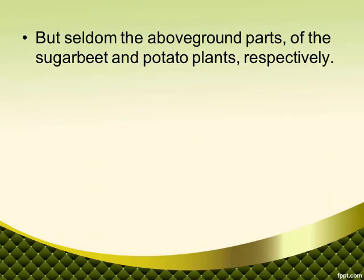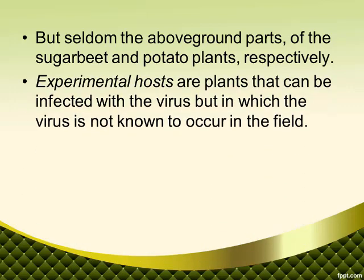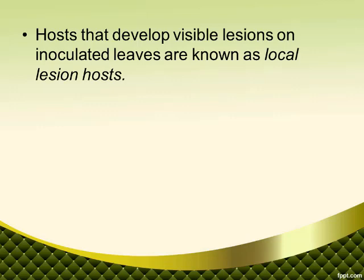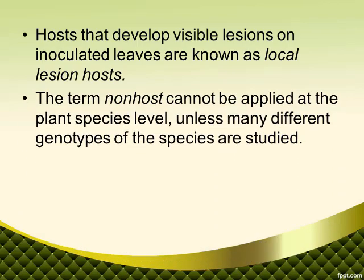Beet necrotic yellow vein virus and potato mop-top virus are transmitted by protists and infect the roots, but seldom the above-ground parts of the sugar beet and potato plants respectively. Experimental hosts are plants that can be infected with the virus but in which the virus is not known to occur in the field. They can be systemically infected, or they may only support virus multiplication and cell-to-cell movement in the inoculated leaves. Hosts that develop visible lesions on inoculated leaves are known as local lesion hosts.